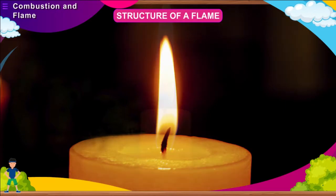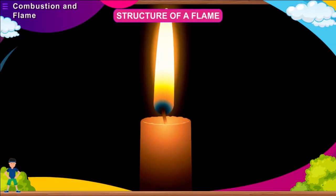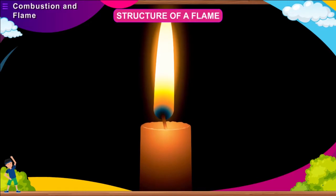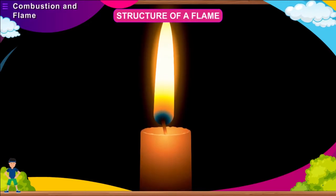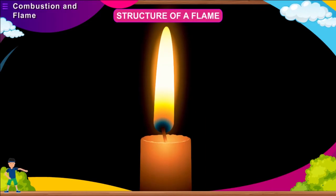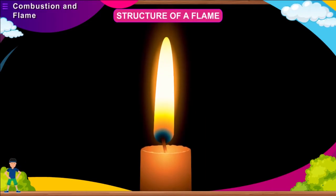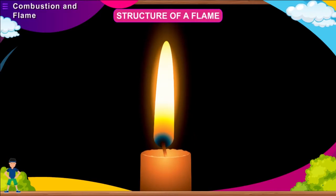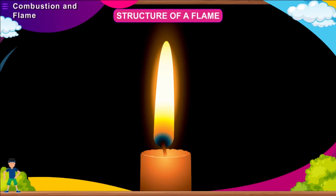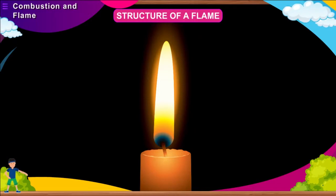If you observe a burning candle, you will notice that the flame is not the same throughout — it has various zones. The color of the flame is blue at the base, close to the wick. There is a zone around the wick called the dark zone. There is a luminous zone around the dark zone, which is yellow in color. Then there is another zone that is non-luminous, which is hardly visible. We shall now discuss these zones in detail.